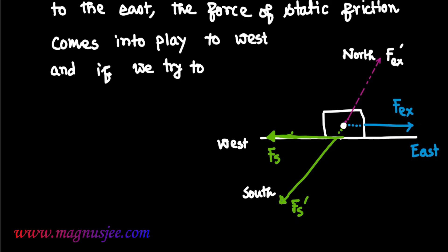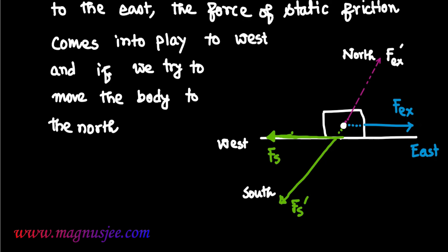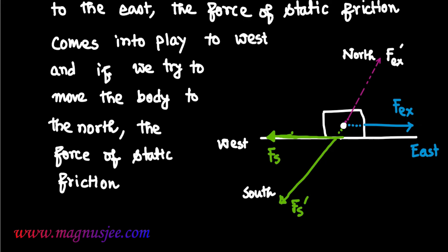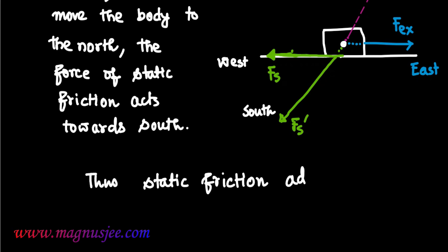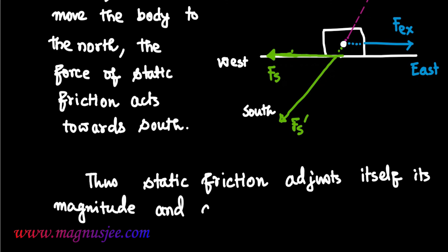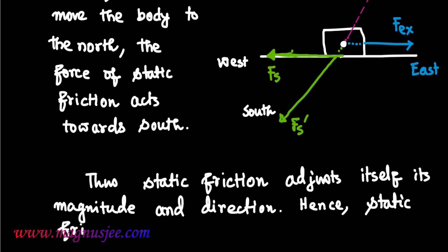The force of static friction comes into play towards west when we try to move the body to the east. And if we try to move the same body to the north, the force of static friction will be acting towards south. Thus, static friction adjusts itself in both magnitude and direction. Hence, static friction is a self-adjusting force.